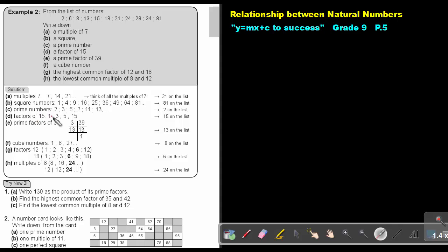Factors of 15. First write down the factors of 15: 1 and 15, 3 and 5. Which one is on the list? 15.